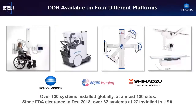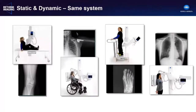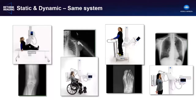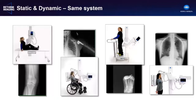DDR is currently available on four different acquisition platforms from three different vendors. In addition to conventional overhead x-ray room and floor-mounted straight and U-arms, it has recently been FDA cleared for use with a wireless detector in a mobile x-ray unit. This variety of platforms enables DDR to be used wherever conventional radiography is done today, whether at a large hospital, a small imaging center, or orthopedic clinic. In the last few years, over 130 systems have been installed globally, the majority in Japan with growing utilization in the United States.